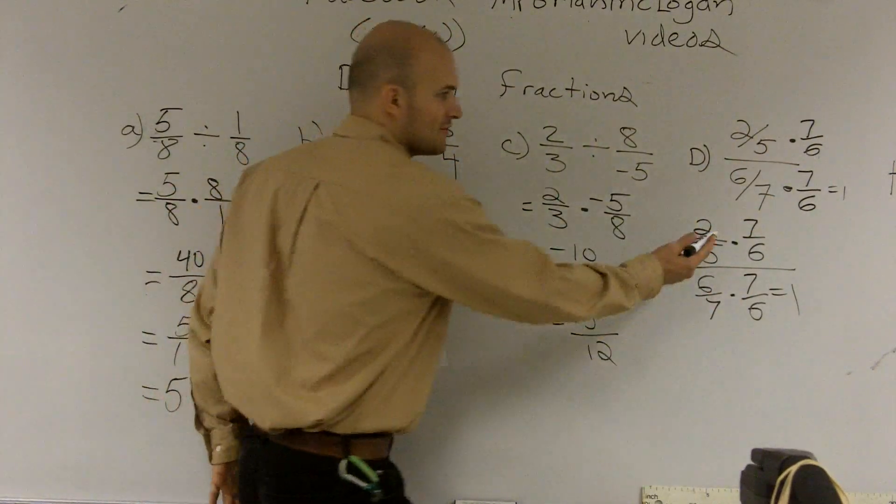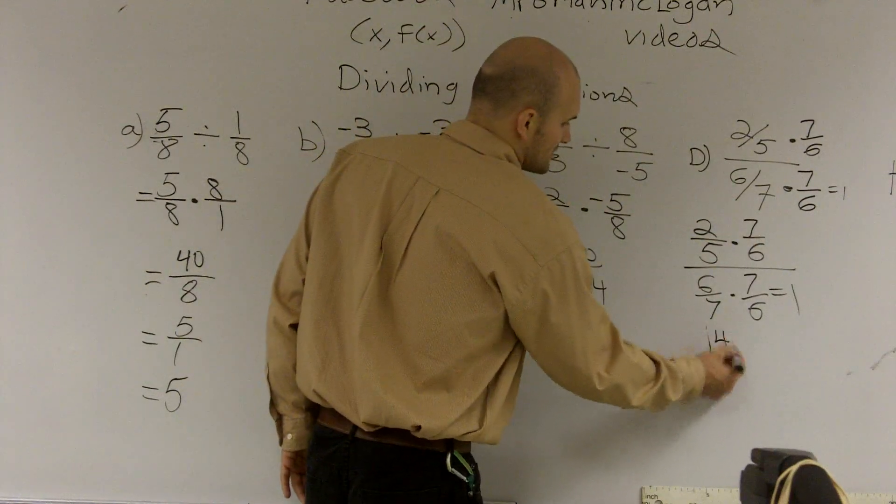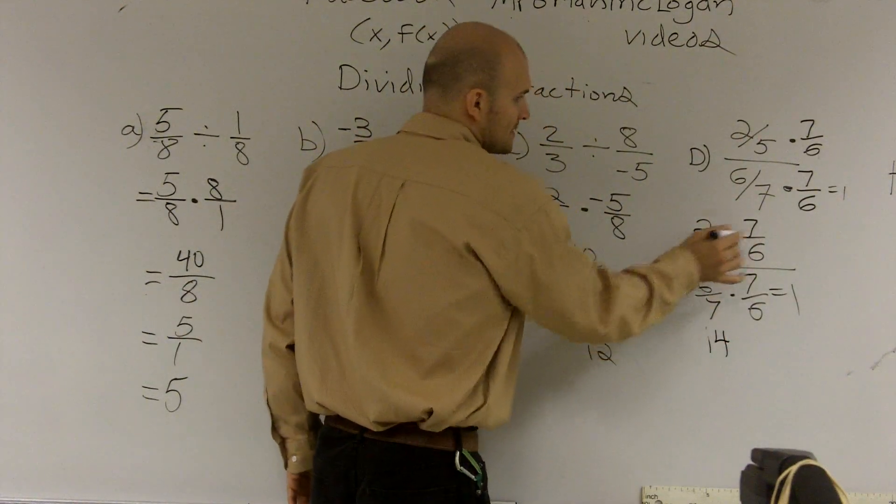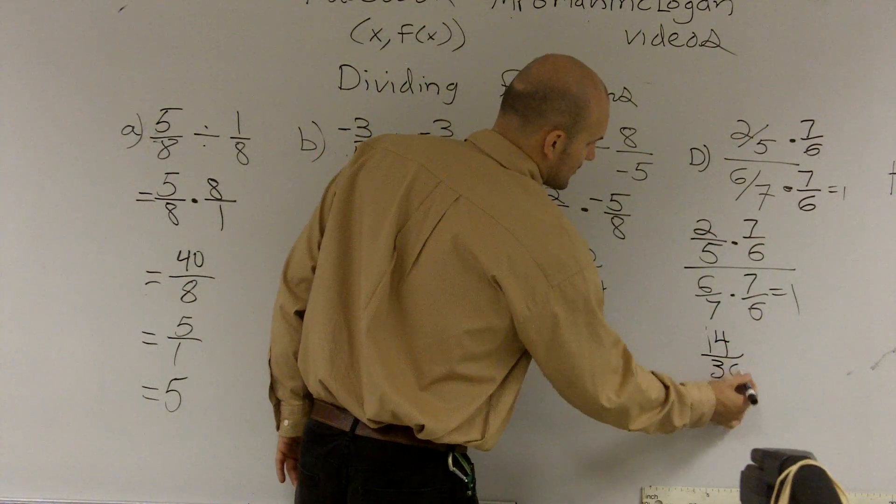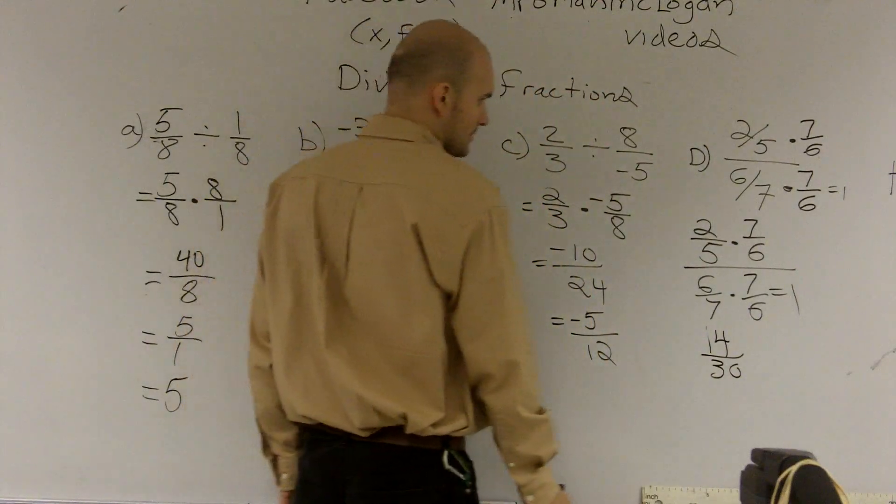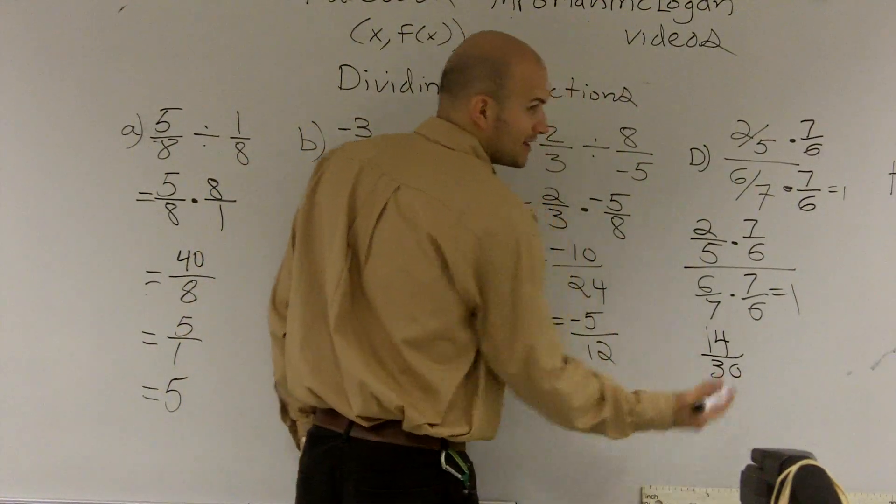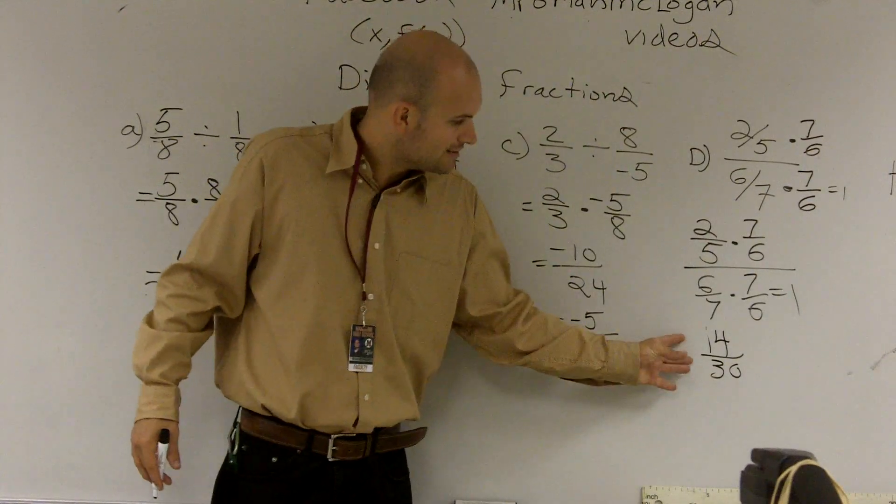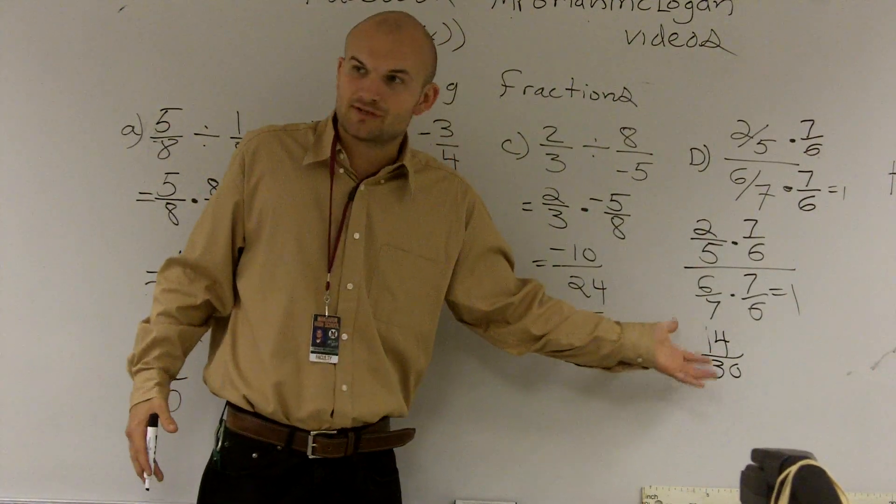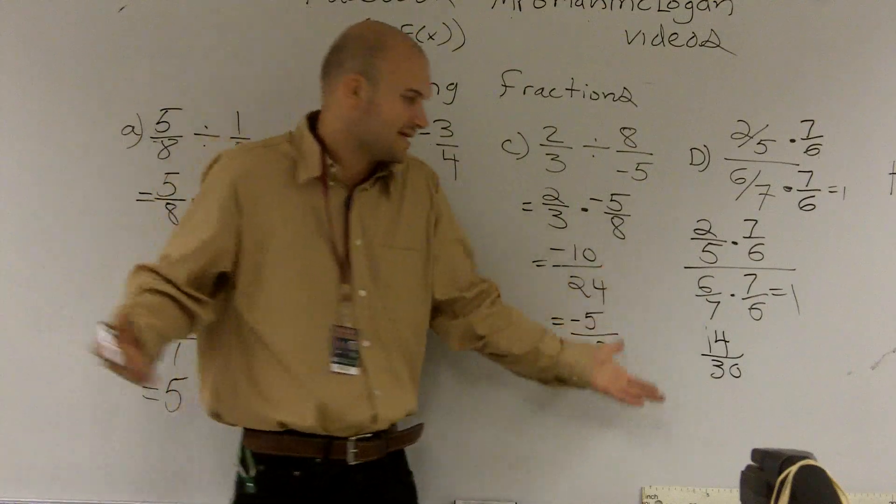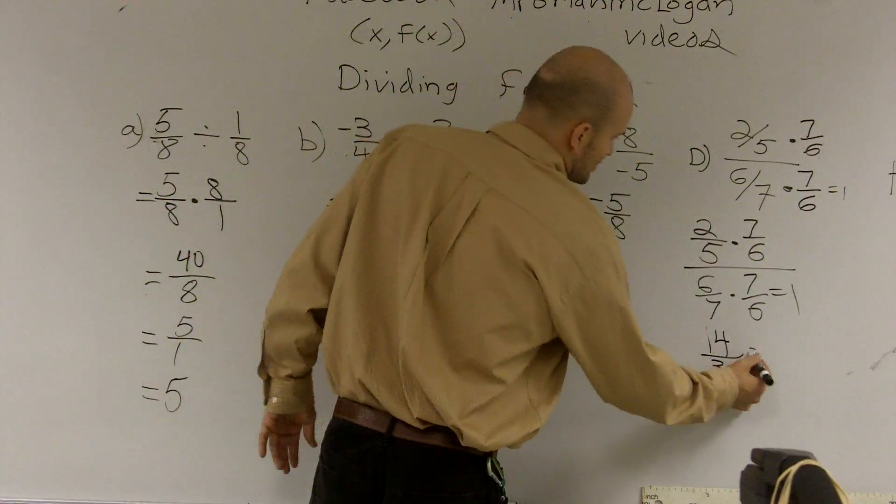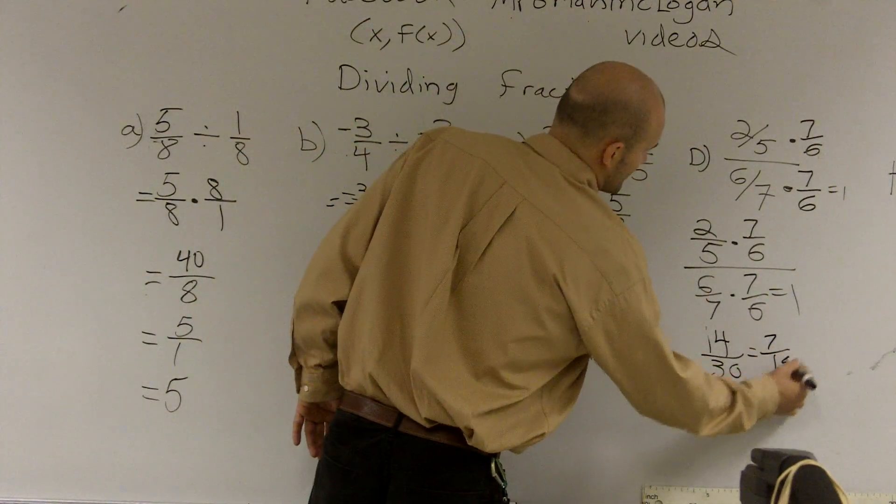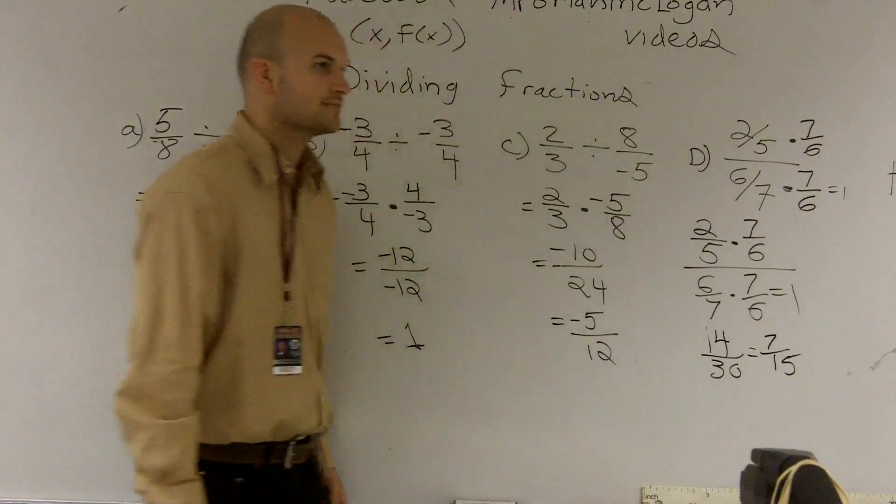So then, again, we go back. 2 times 7 is 14. 5 times 6 is 30. And that's all divided by 1, but I don't need to write divided by 1 because we know it's not going to do anything. Then again, we have to reduce the fraction. And it is, again, going to be taking out 2. So I take out 2, so it would be 7/15. And that would be your final answer.